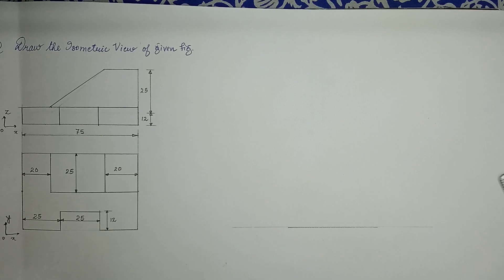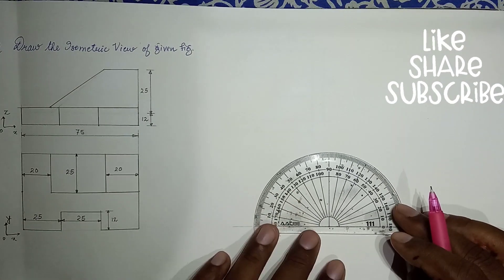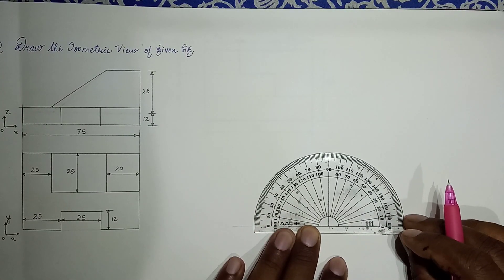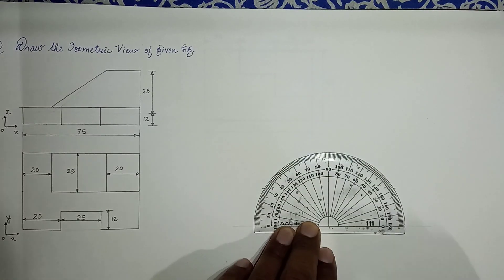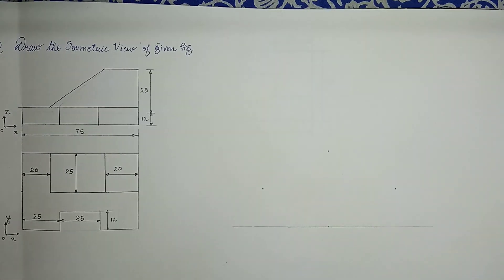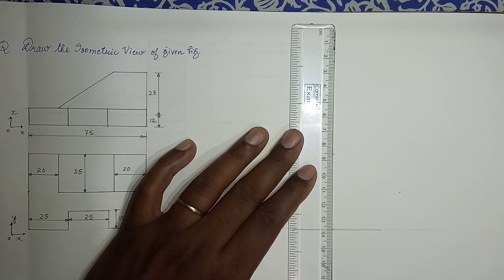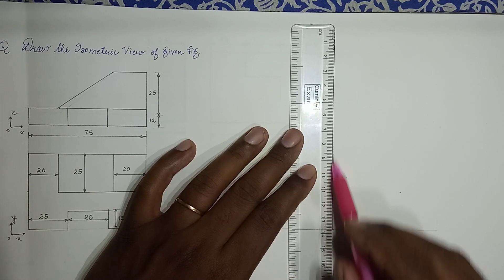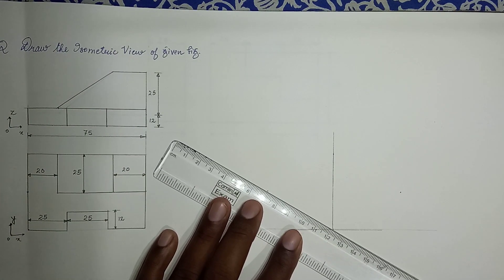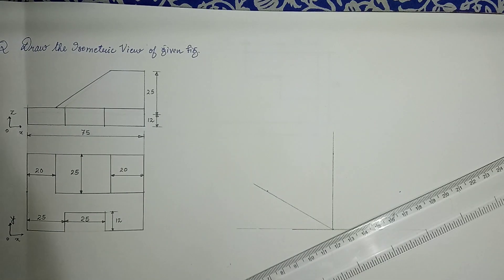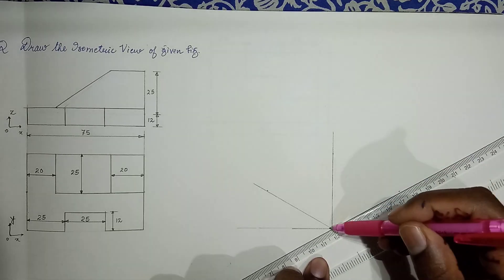So we draw a horizontal line, take a point, and draw two lines at 30 degrees on to the right and 30 degrees on to the left. You can also mark 90 degrees. This is the axis along z-axis, this is the axis along y-axis, and this is the axis along x.